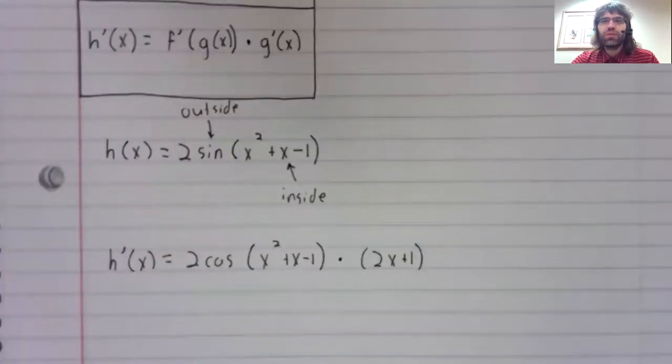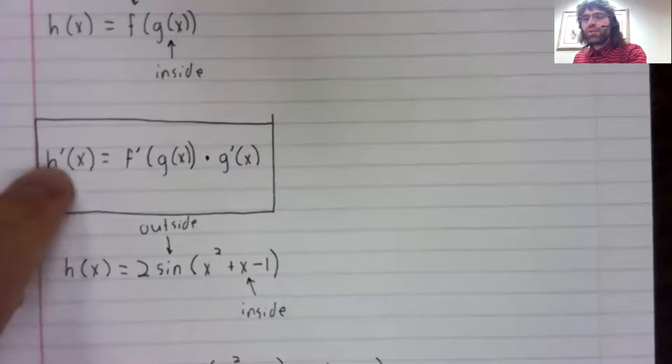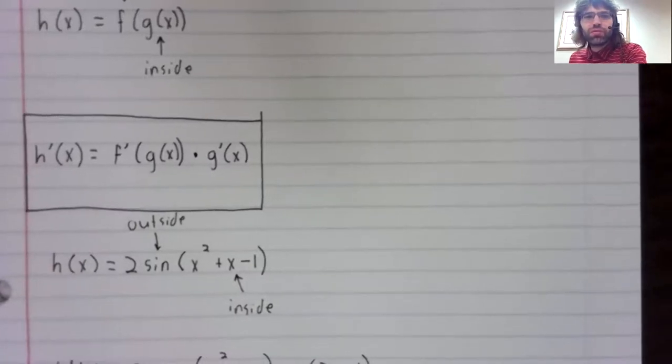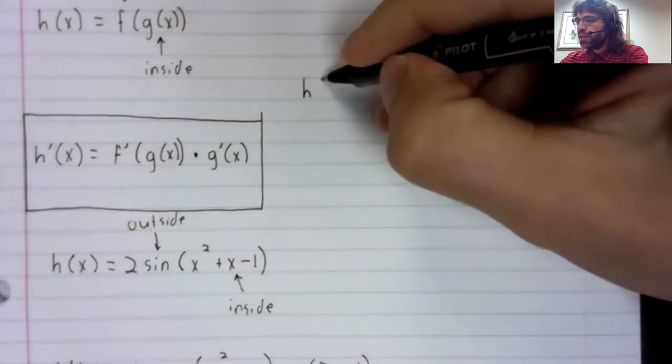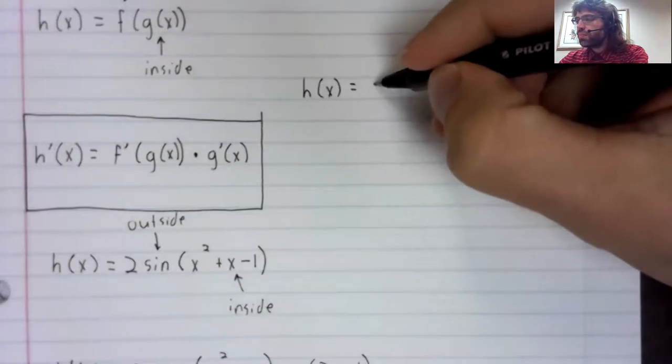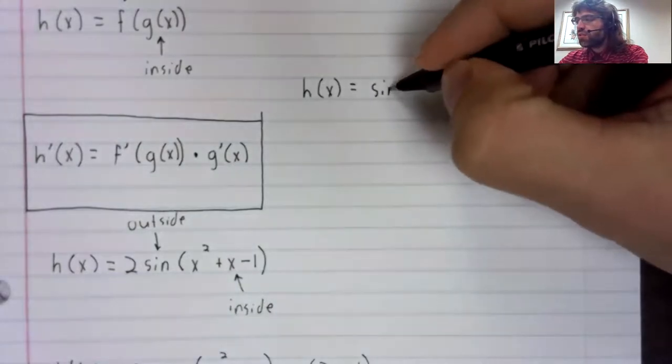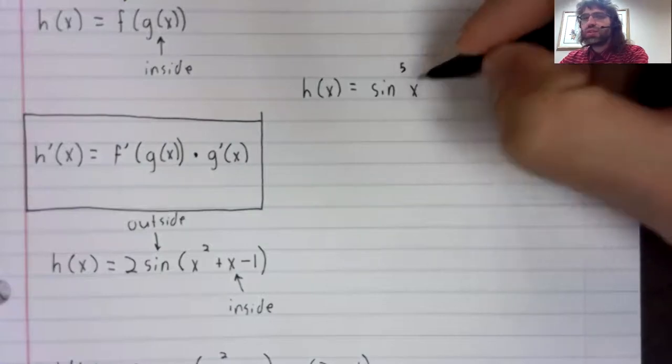Let's do one more example. We'll go up here so that the chain rule remains visible on our screen.